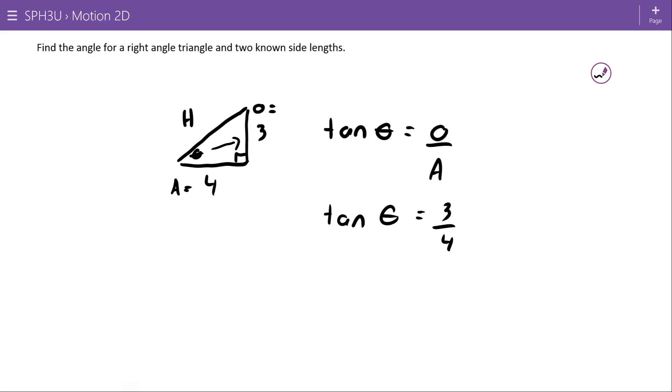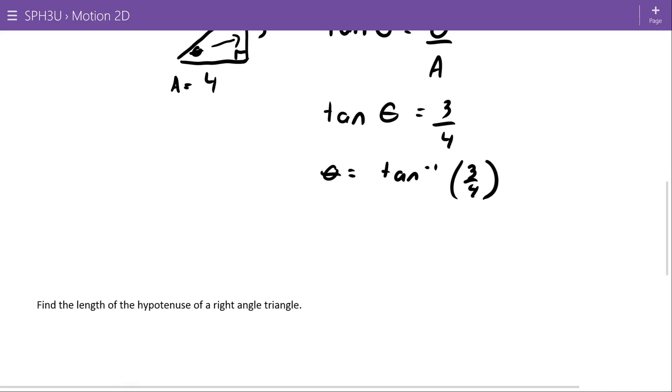And then to get the angle on its own, I do the inverse tan function. So theta equals tan inverse 3 over 4. You're just reaching for a calculator here. Don't be trying to do anything like this. But again, a quick reminder, make sure your calculator is on degrees.